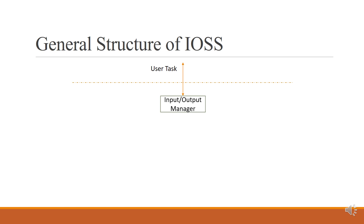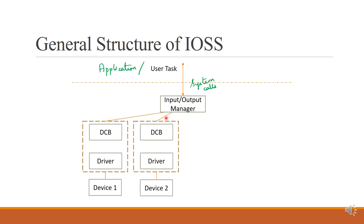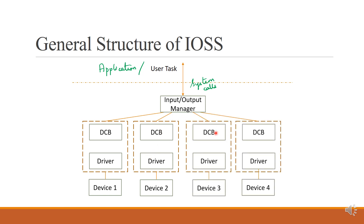In the general structure of IOSS, we have an application or user task. Information is conveyed using system calls. The IOSS manager accepts the system calls from the user or application task and transfers the information contained in those calls into the device control block.